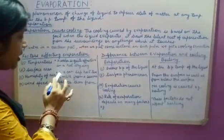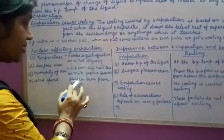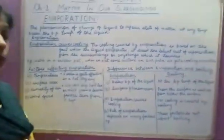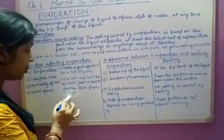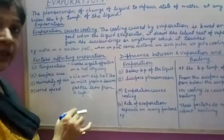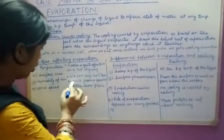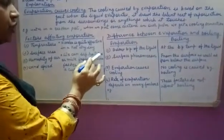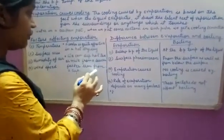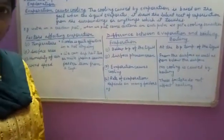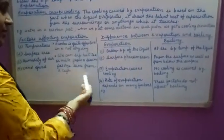One more example: we can cool hot tea or milk from a saucer faster than from a cup. The surface area of a saucer is larger compared to the surface area of a cup. Therefore, the rate of evaporation of the liquid is faster from a saucer than from a cup, which is why hot tea or milk cools faster in a saucer.